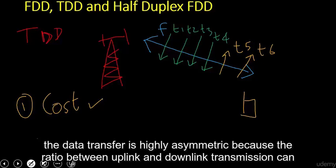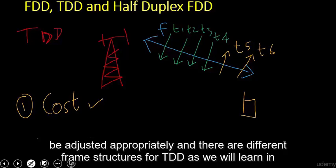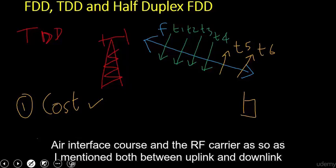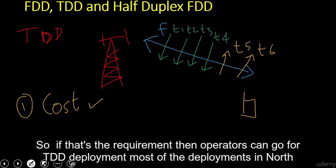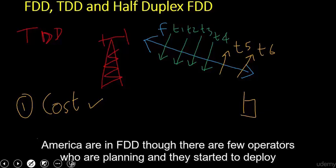TDD is attractive for systems where data transfer is highly asymmetric, because the ratio between uplink and downlink transmission can be adjusted appropriately. There are different frame structures for TDD as covered in the air interface course. The RF carrier can remain fully utilized. Most deployments in North America are FDD, though some operators have started deploying TDD.